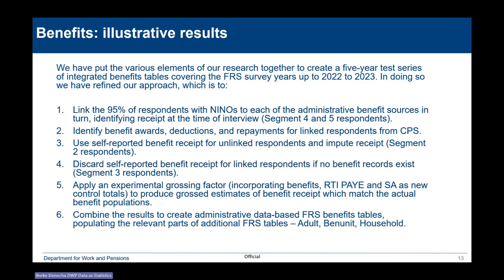The steps in the process are: linking the 95% with NINOs to the administered benefit sources; identifying benefit awards, deductions and repayments for linked respondents from the central payment system; using self-reported receipt with credibility checking to impute receipt for unlinked cases; disregarding misreporting; and then applying the experimental grossing factor to produce grossed estimates of benefit receipt that match the actual benefit populations.